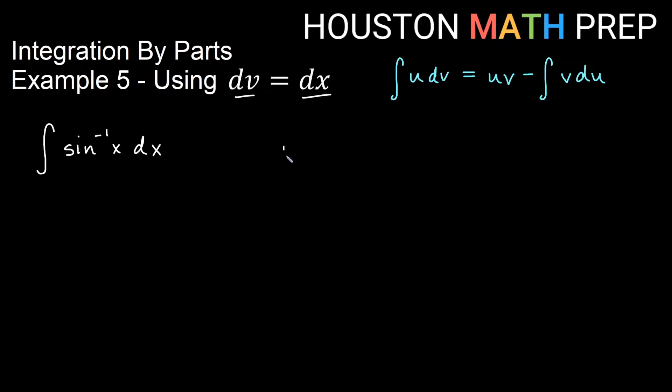So the idea for this will be that we choose u to be the inverse sine of x because in integration by parts, I will then take the derivative of that thing, which I should know that formula is 1 over square root of 1 minus x squared dx.